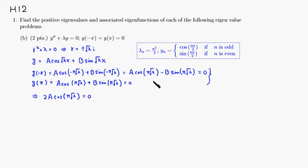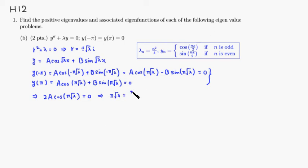Since cosine and sine cannot both be zero at the same time, the only way to have a non-trivial solution is if cosine of pi times square root of lambda equals zero. Cosine is zero when its argument is pi over two, or you can add any multiple of pi. So pi times square root of lambda equals pi over two, which can be written as (2N plus 1) over 2 times pi.